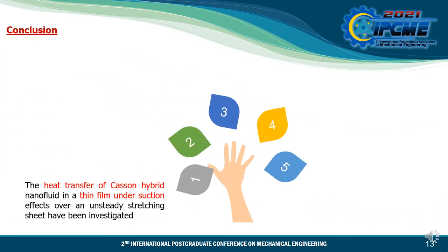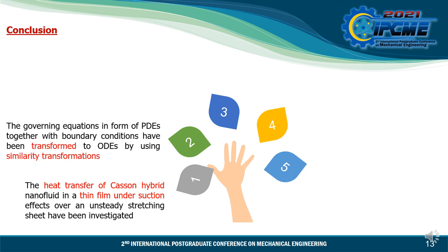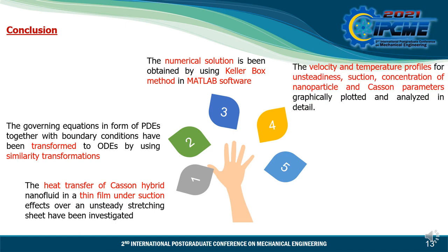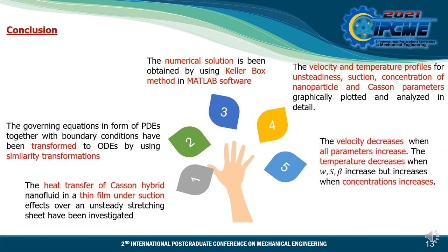For the conclusion: firstly, the heat transfer of a Casson hybrid nanofluid in a thin film under suction effects over an unsteady stretching sheet has been investigated. Second, the governing equations in PDE form together with boundary conditions have been transformed to ODEs using similarity transformation. Third, the numerical solution was obtained using the Keller-box method in MATLAB software. The velocity and temperature profiles for unsteadiness, suction, concentration of nanoparticles, and Casson parameters were plotted graphically and analyzed in detail. The velocity decreases when all parameters increase, and the temperature decreases when suction, unsteadiness, and Casson parameters increase, but increases for the concentration of nanoparticles parameter.